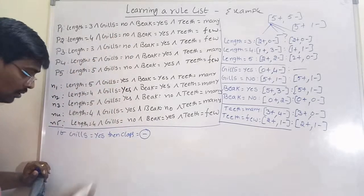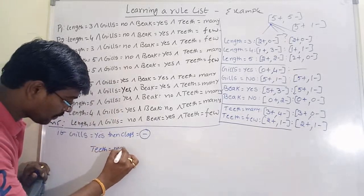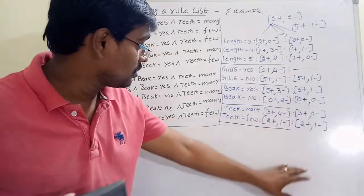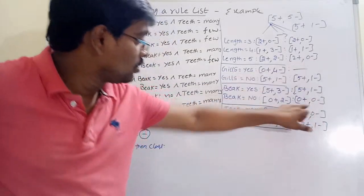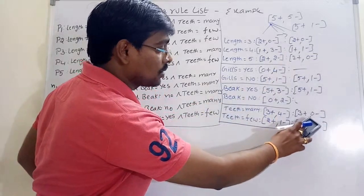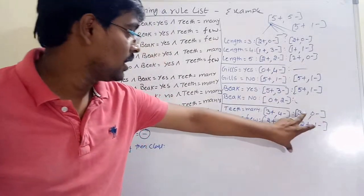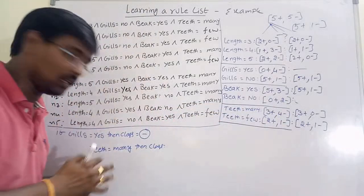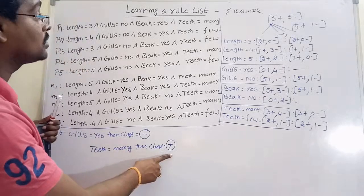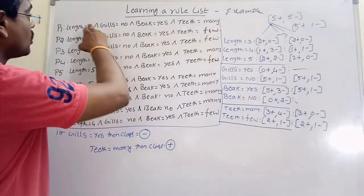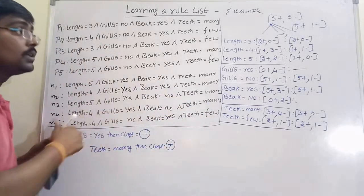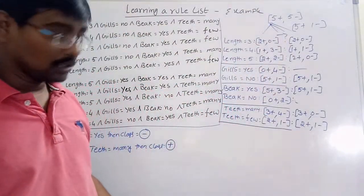Next, define one more rule. Consider teeth equal to many — why? Observe: teeth equal to many gives zero negatives and three positives, so based on homogeneity, if teeth is equal to many then class is positive. After applying this rule, the teeth equal to many instances are removed, leaving two positives and one negative.